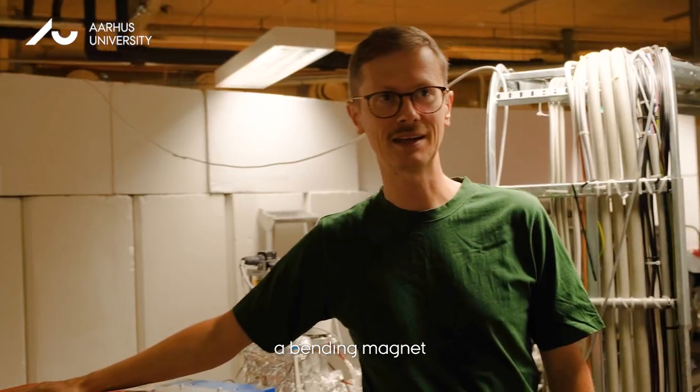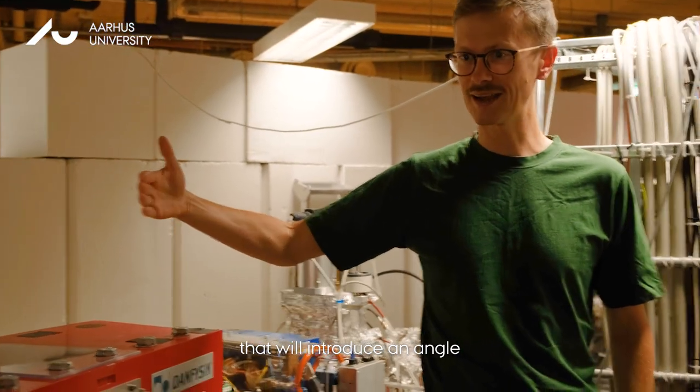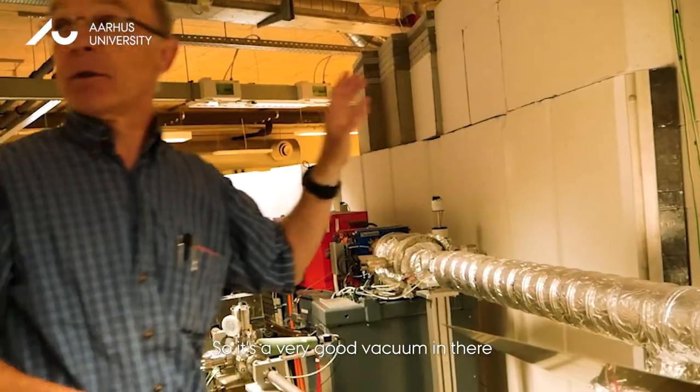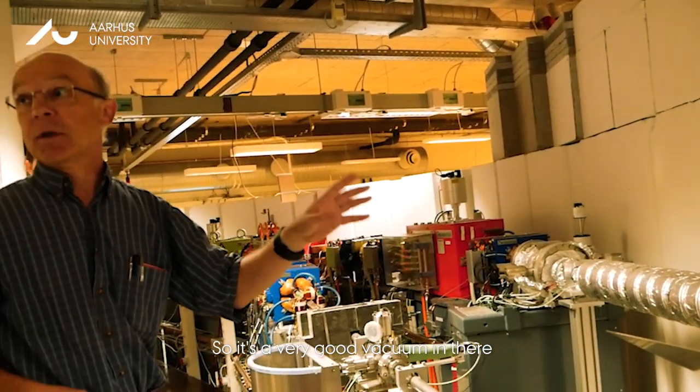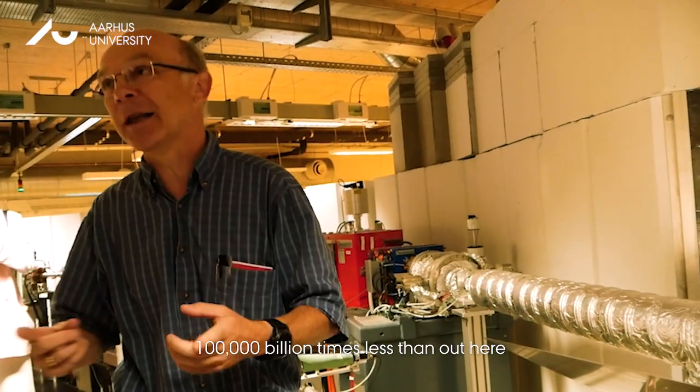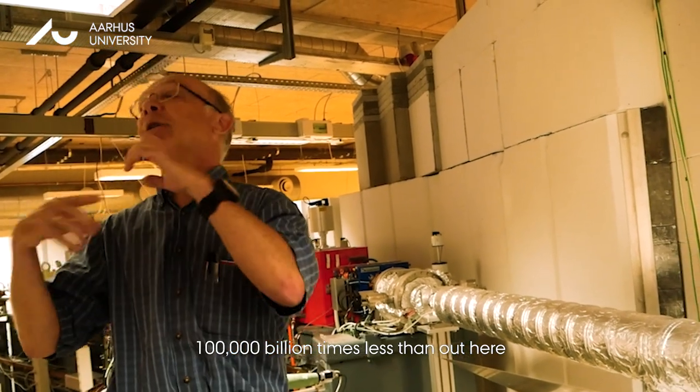This is for instance a bending magnet that will introduce an angle, and this is a tube which has been evacuated for very good vacuum in there. The number of air molecules in there is 100,000 billion times less than out here.